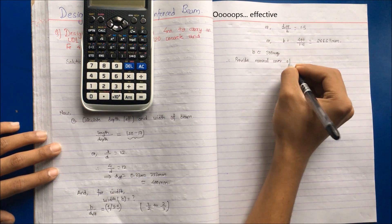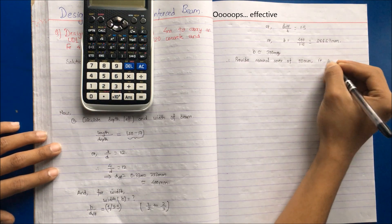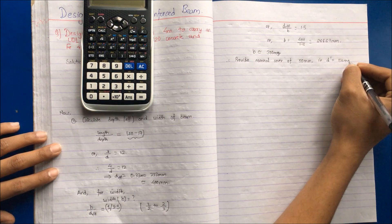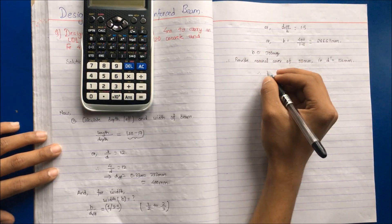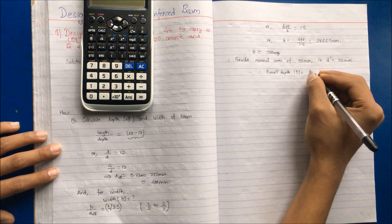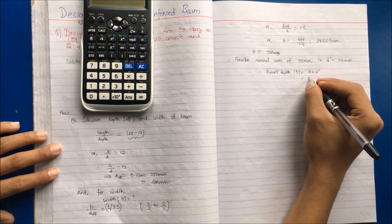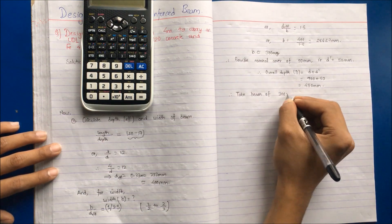Provide effective cover, not nominal cover. Because nominal cover is the distance between the edge of the bar and edge of the concrete, but effective cover is the distance between the edge of the concrete and center of the rebar provided. So overall depth D is equal to D plus D dash, that is effective depth plus effective cover which comes to be 450 mm. Now take beam of 300 by 450 mm size.